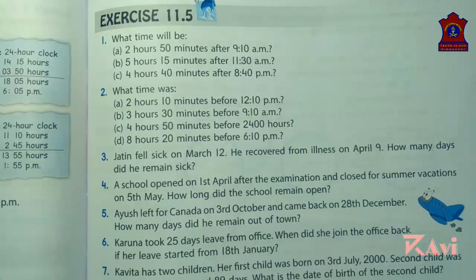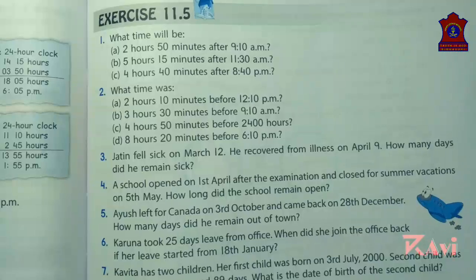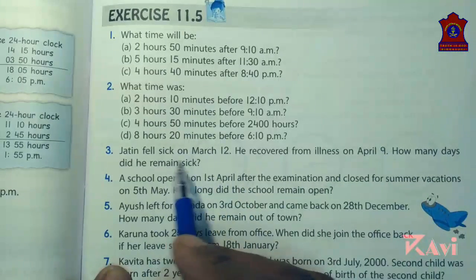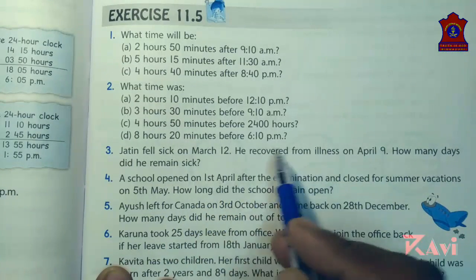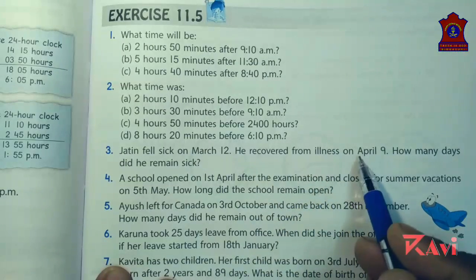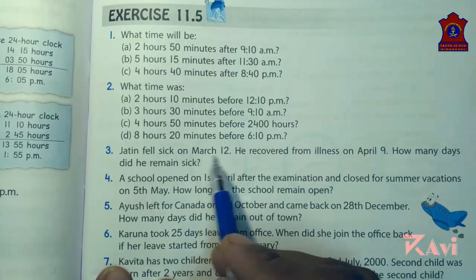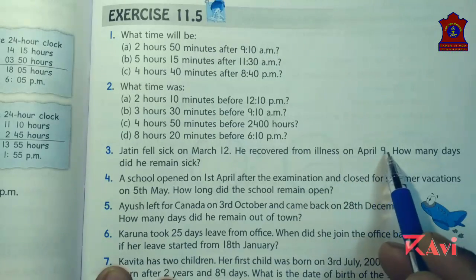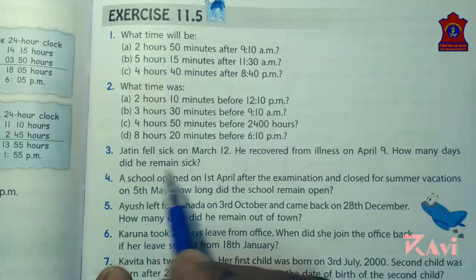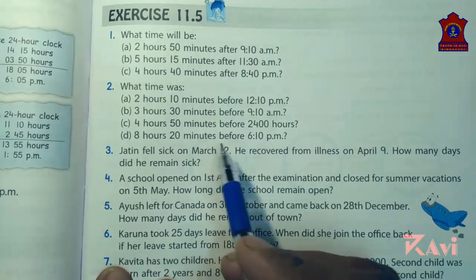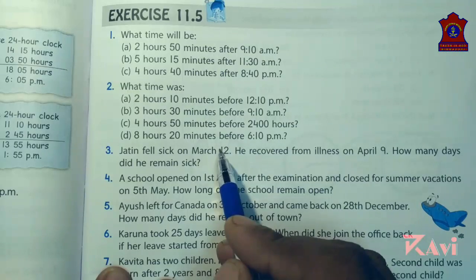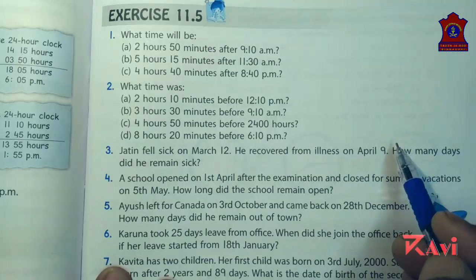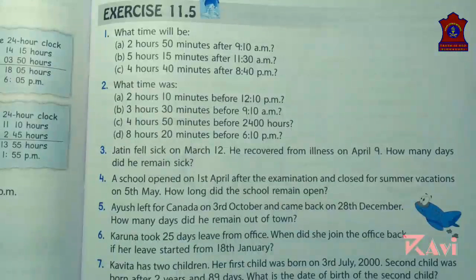Now let's read question number three. Jatin fell sick on March 12. He recovered from illness on 9th April. How many days did he remain sick? Jatin was sick from 12th March and recovered on 9th April, meaning he was ill up to 8th April.